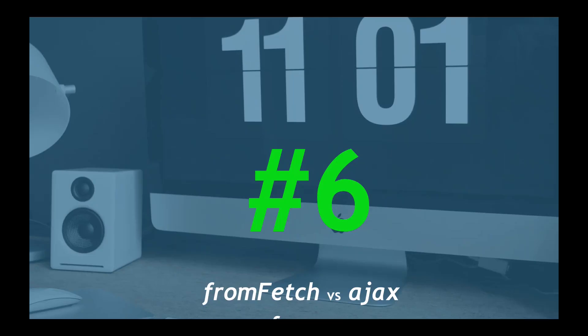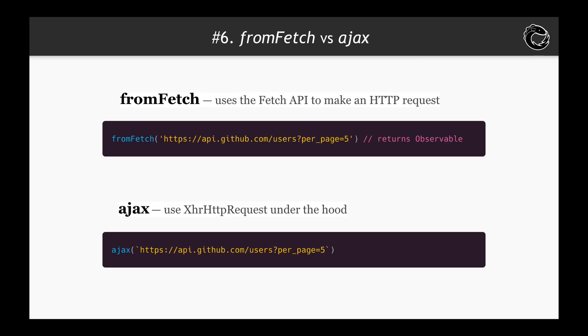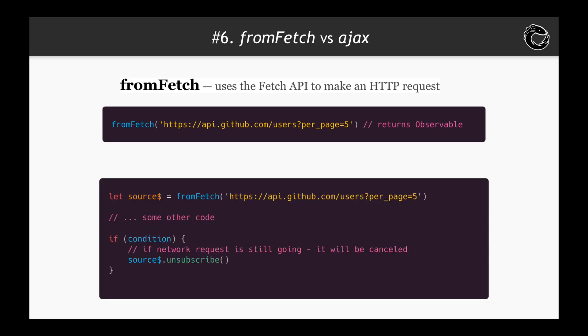Time waster number 6: How RxJS fromFetch and Ajax differ and why you should care. RxJS lib has two ways to wrap network requests in Observable, and they have differences. The fromFetch function uses the Fetch API to make an HTTP request, and the Ajax function uses XHR HTTP request under the hood. Both return Observable.